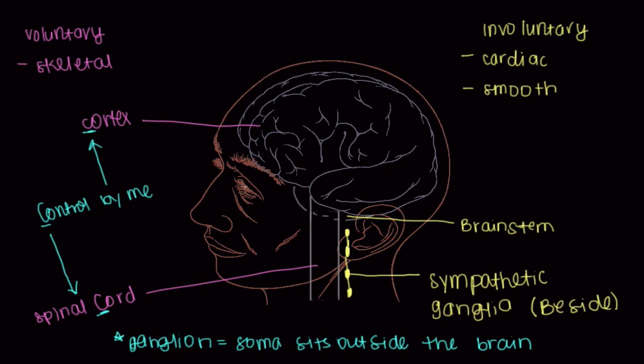The sympathetic ganglia that sit beside the spinal cord. And so that comes with another trick that I like to think about. When I'm trying to remember which parts of my nervous system is responsible for involuntary control. This is stuff that's going on that's beyond me. It's beyond my control.